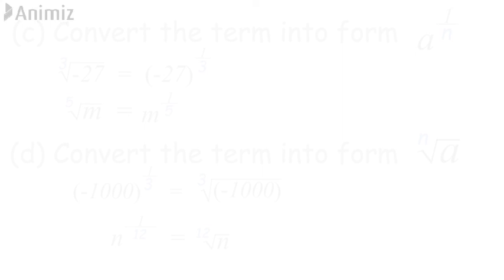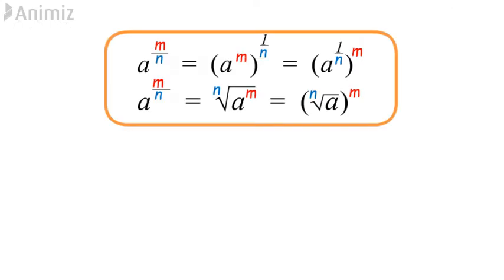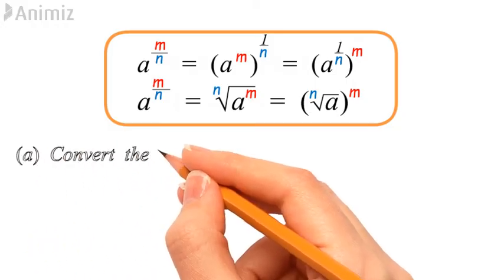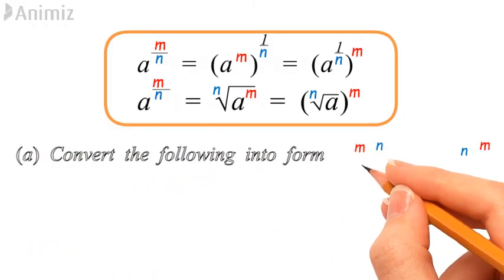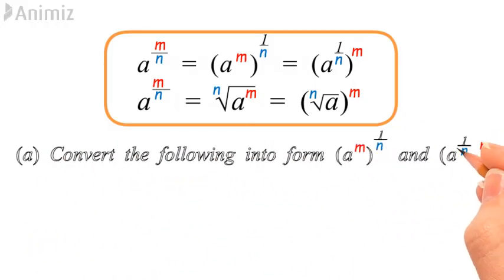The formula in the rounded rectangle shows that a^(m/n) can be written in different forms. Example A: convert the following into the specified forms. By comparing with the formula, we know that 27 is a, 2 is m, and 3 is n in this example.